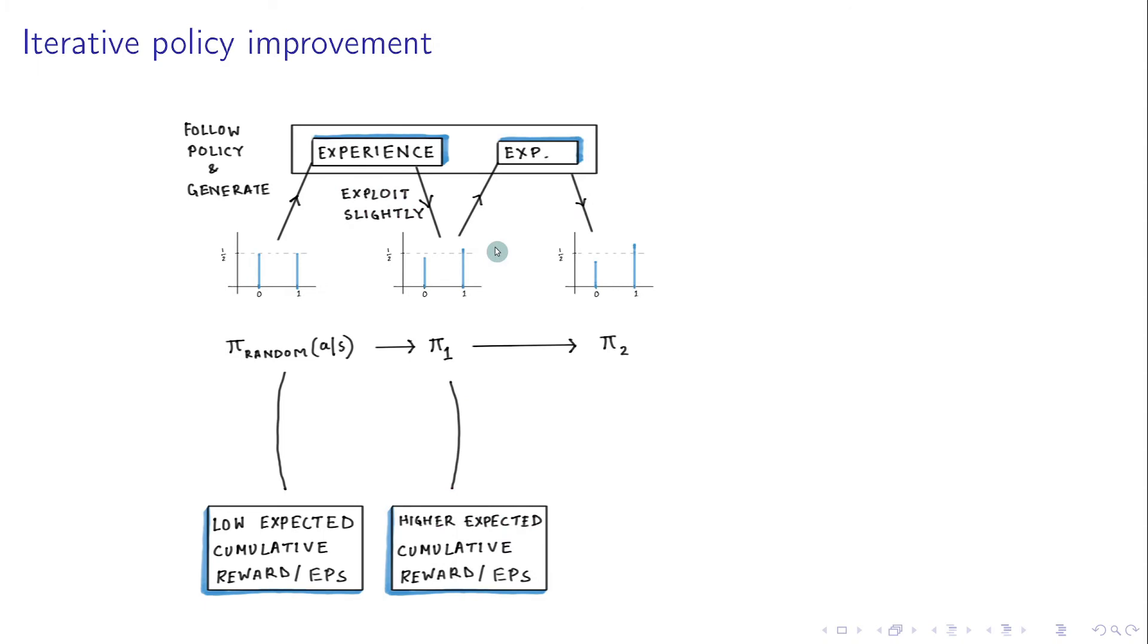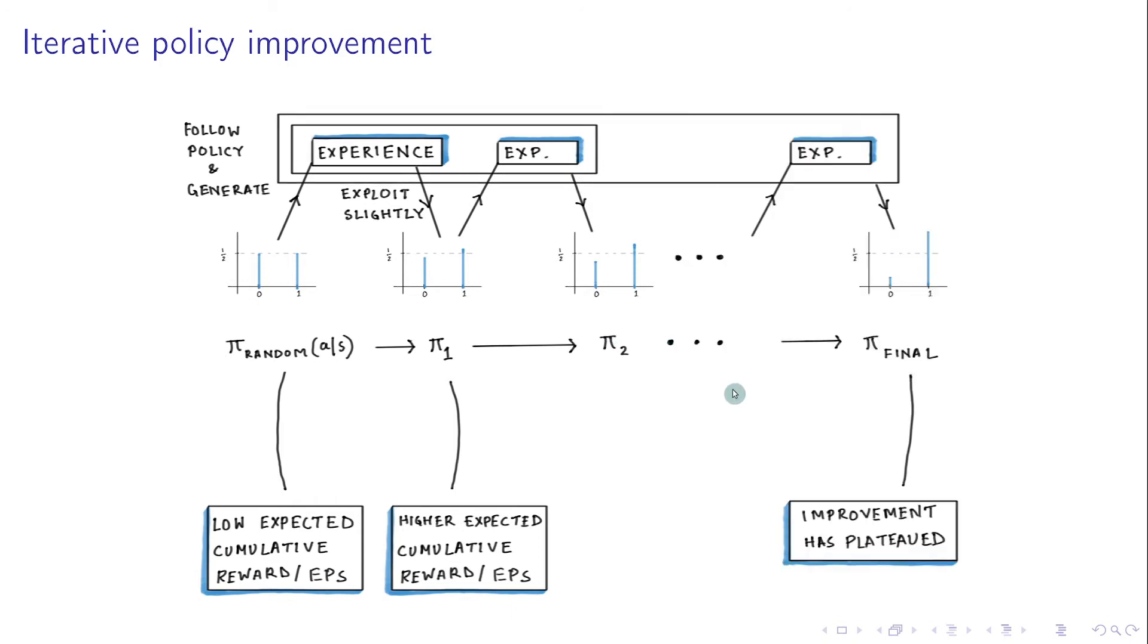So in the next step, we collect more experience using the new policy. And then use the combined experience so far to change the policy slightly once again, to get a better policy Pi2. We continue doing that until the policy does not improve anymore, meaning that the cumulative rewards start plateauing.